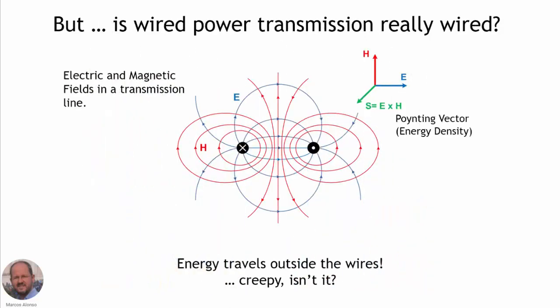It is also interesting to know what is really happening in a transmission line. If we calculate the electric and magnetic fields in these systems, we will see that most of the fields are in the area surrounding the cables, while the fields inside the cables are really small. So if we calculate the energy density by calculating the Poynting vector, we will see that most of the energy is traveling outside the cables. So the cables are acting as a guide for the transmission of the energy, but most of the energy travels outside the wires.